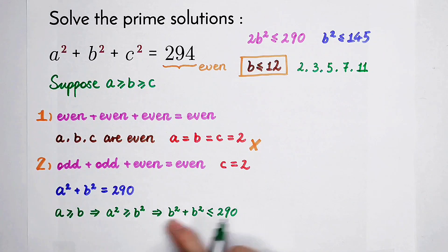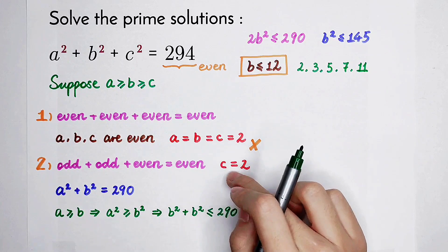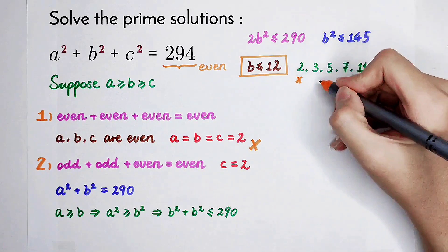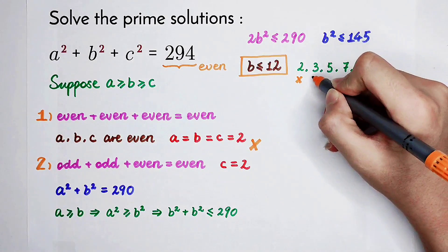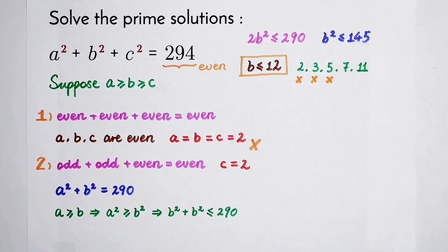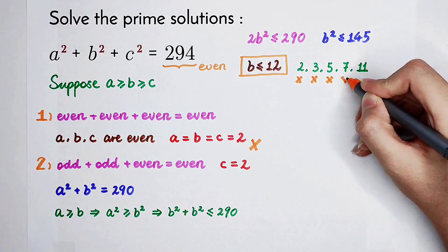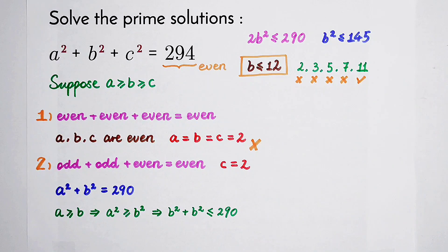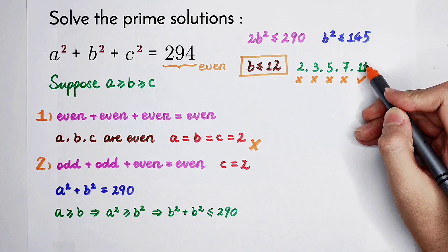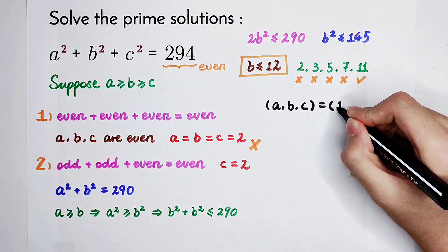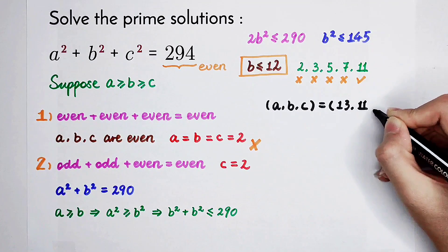Because we are in the second case where c equals 2 and is even, b must be odd, so b cannot equal 2. Testing b equals 3, 5, and 7 yields no solutions. But if b equals 11, then a squared equals 290 minus 121, which is 169, so a equals 13. Therefore, the solution is a equals 13, b equals 11, c equals 2.